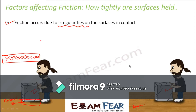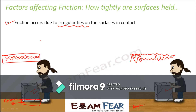Now if you look at a rough surface, it will have more irregularities. The box still has similar irregularities. When you have more irregularities, the chances of interlocking increase — the shapes fill into the gaps of each other. The more the interlocking, the greater is the friction, because more interlocking means the two surfaces are held together more strongly.